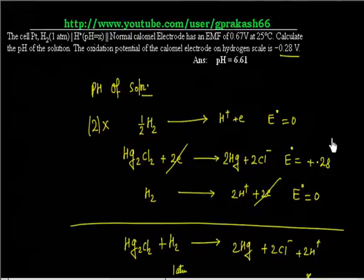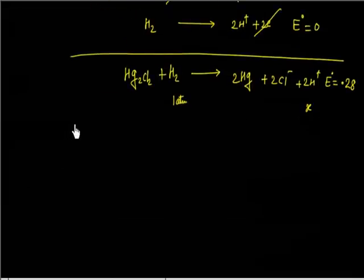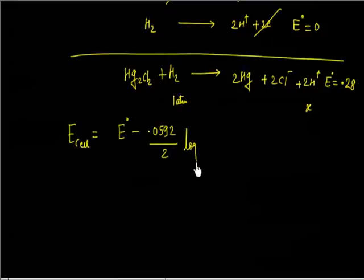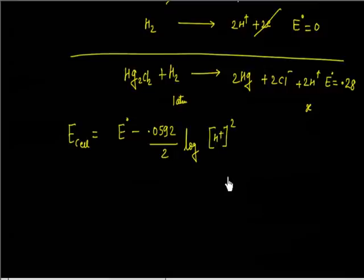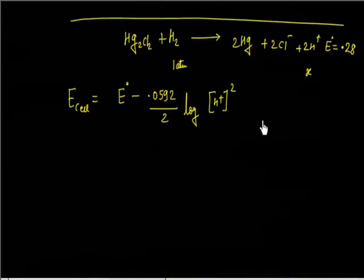The EMF of this cell is 0.67 V. E° of this cell is 0 + 0.28 = 0.28 V. Now I can write the Nernst equation for non-standard conditions: E_cell = E° − (0.0592/2) × log([Cl⁻]² × [H⁺]²). But Cl⁻ is at standard condition — we assume it is 1 M — so no need to include it. We simply write [H⁺]². E_cell is 0.67 V and E° is 0.28 V.